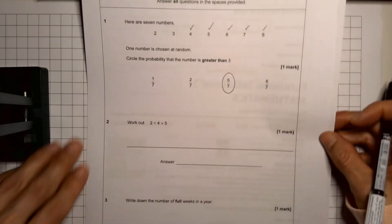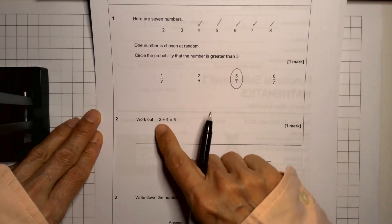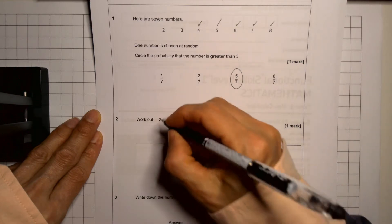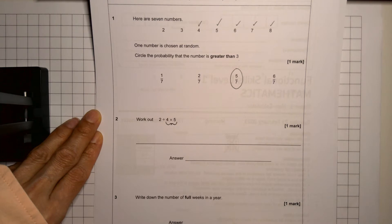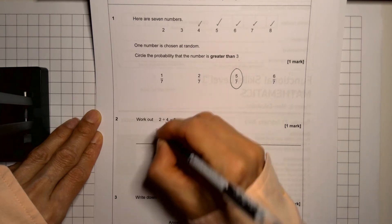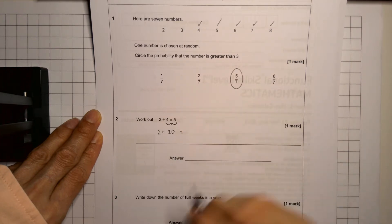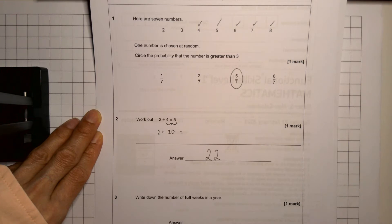The next one is an order of operation question. I hope you can see it's 2 plus 4 multiplied by 5. Now here you have to remember that multiplication is always done first. So 4 times 5 is 20 and then we have 2 plus 20 gives us the answer 22. Another one mark question, nice.